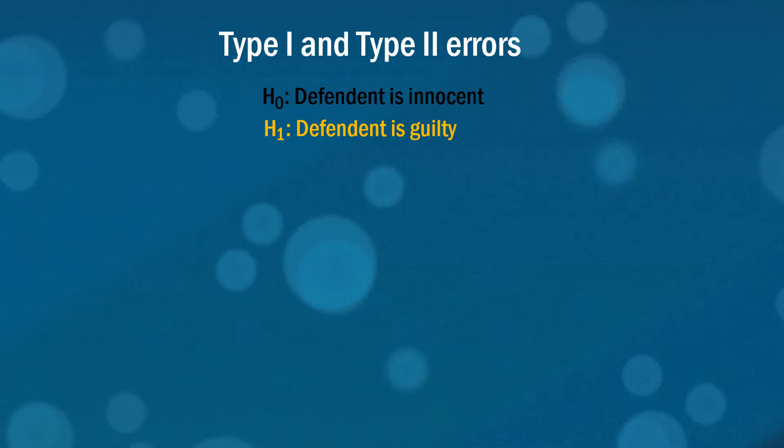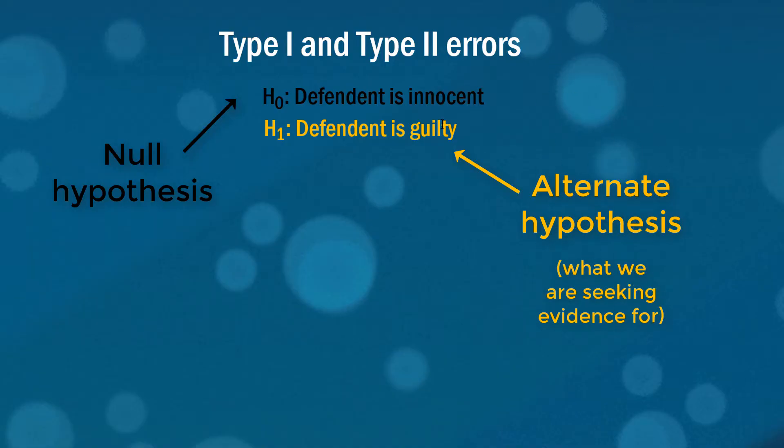In our null hypothesis, this top line is called a null hypothesis, we say that the defendant is innocent. We want to see if there's enough evidence to move from the null hypothesis to our alternate hypothesis. Realistically, it is this alternate hypothesis that we are seeking evidence for. It's important to note that the default setting or null hypothesis is the reverse of what we're seeking evidence for.